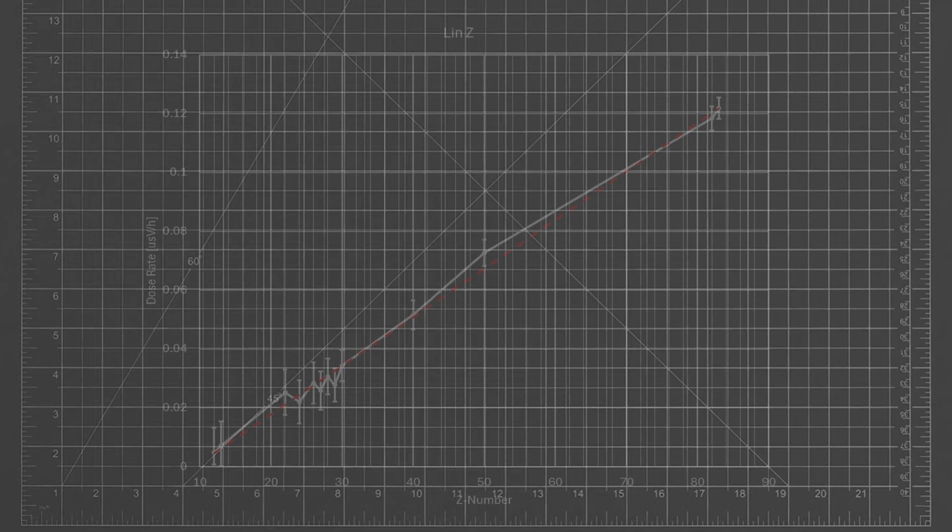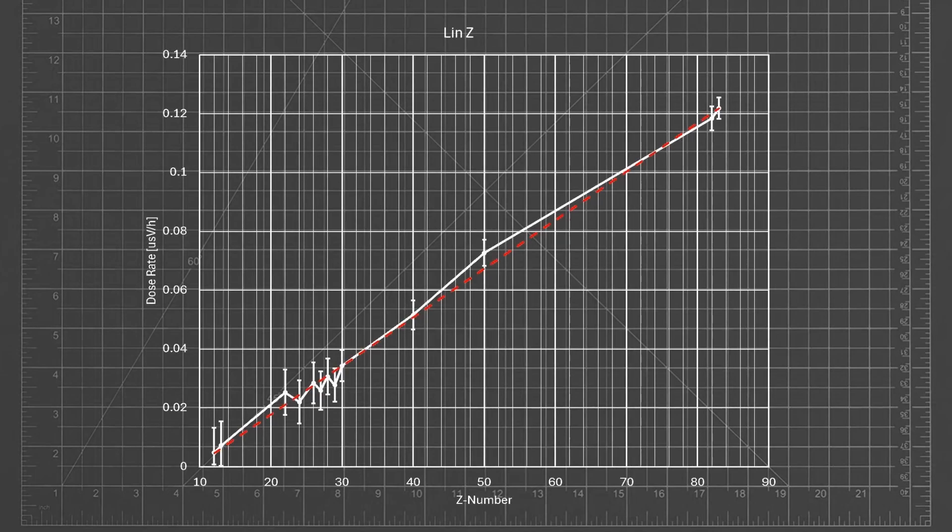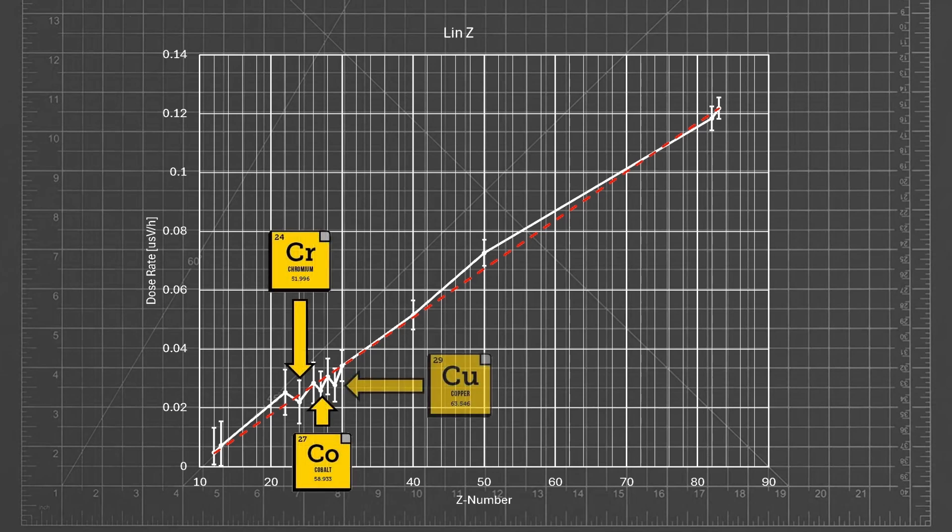When we plot these results out, we can see that there are only three measurements that disagree with the general trend. These slight errors occur for the measurements of chromium, cobalt and copper. These elements are in a tight group, and this result is probably just reflective of the general level of uncertainty in the measurements.